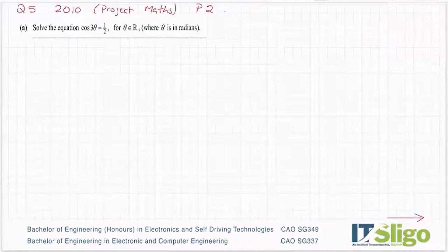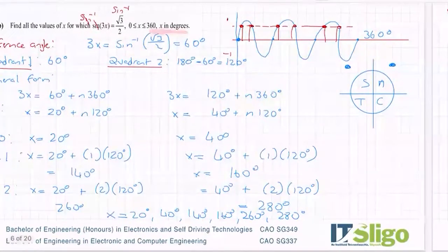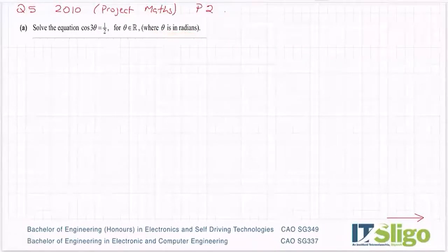Okay, question five from 2010 paper. At the start of Project Maths coming in, there were two papers that year, a 2010 Project Maths paper and a non-Project Maths paper. So it's off the Project Maths. Part A: solve the equation cos(3θ) = 1/2 for θ an element of R, where θ is in radians. The ones we were doing the last day were θ in degrees, and this one θ in radians, which just needs a little bit of practice.